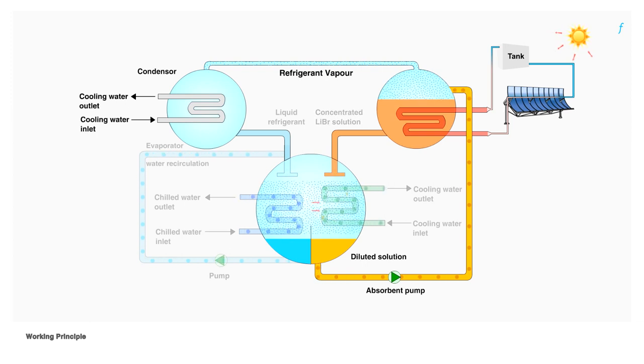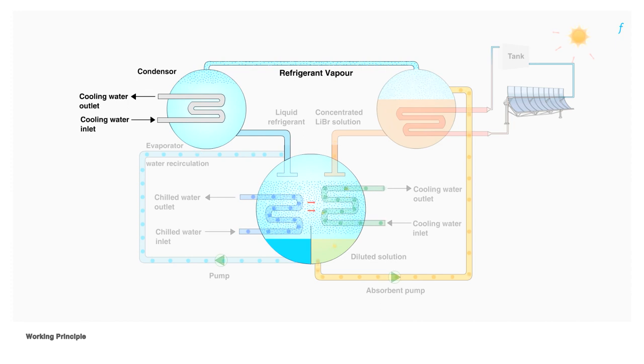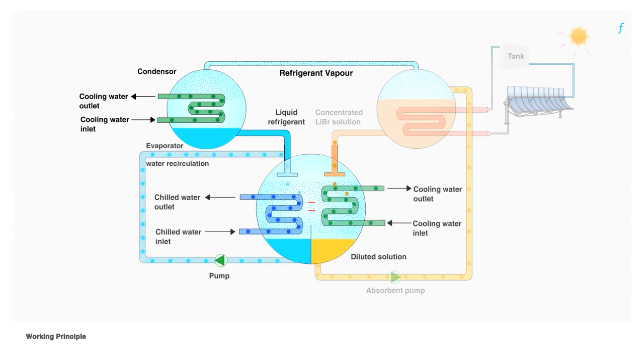Water vapor from the generator is not allowed to escape and is directed to a separate chamber called the condenser, where it is stored. This vapor is condensed by bringing it in contact with tubes containing water from the cooling tower. The condensed refrigerant is made to enter the evaporator, where it vaporizes due to the prevailing low pressure conditions, while passing over the chilled water tubes.